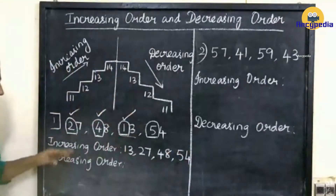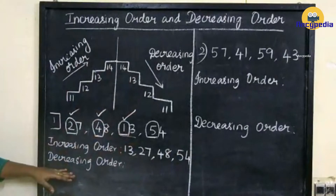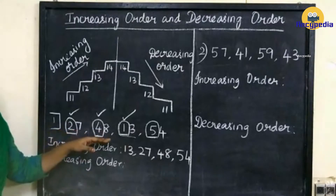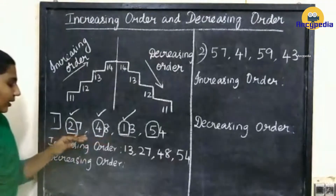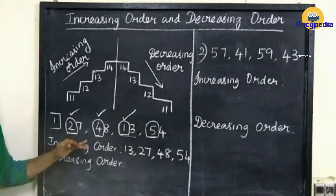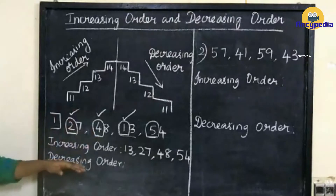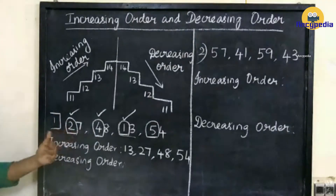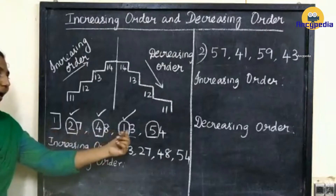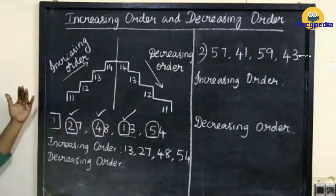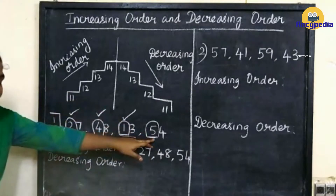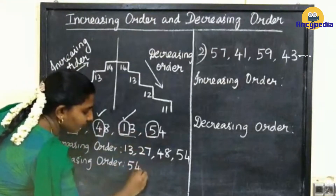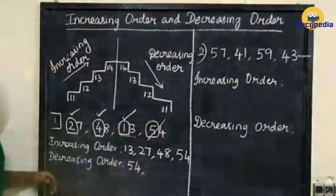Next, you have to write the numbers in decreasing order. In decreasing order also, we have to compare the numbers in the tens place. Compare the numbers and tell me which one is larger, because for decreasing order we have to write the numbers from larger to smaller. Compare 2, 4, 1, 5 — which one is larger? So first we have to write 54.